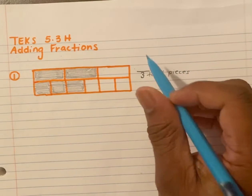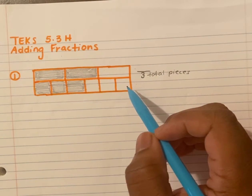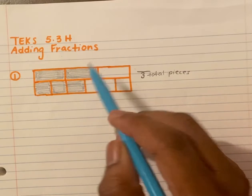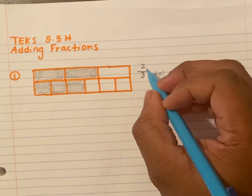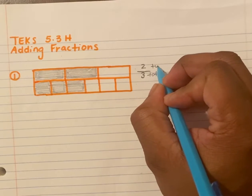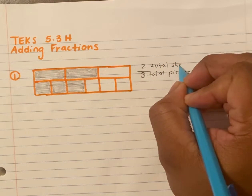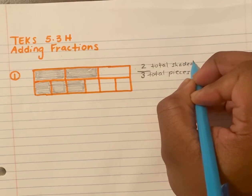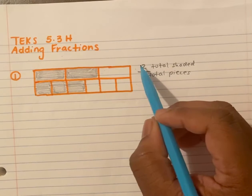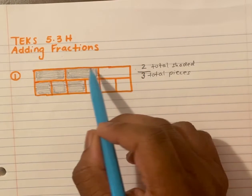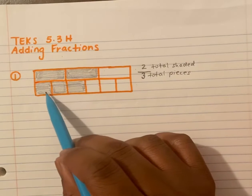Of the total, how many pieces are shaded? One, two — so this becomes two-thirds, because the numerator is my total shaded and my denominator is my total pieces. In other words, two-thirds of this section is shaded.